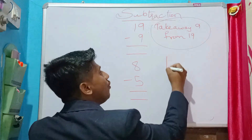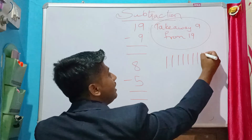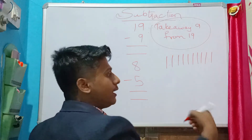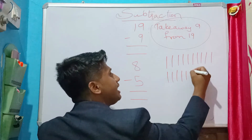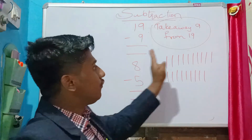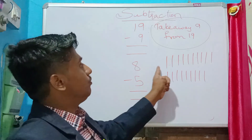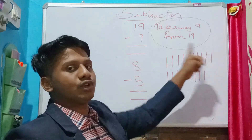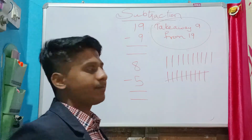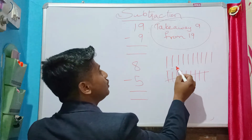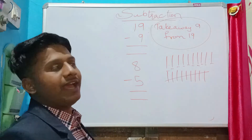Let's do this. First we have to draw 19 lines: one, two, three, four, five, six, seven, eight, nine, ten — still nine more — one, two, three, four, five, six, seven, eight, nine. Out of 19 I have to take out nine, so I will cancel these nine. Remaining: one, two, three, four, five, six, seven, eight, nine, ten. The answer is 10.